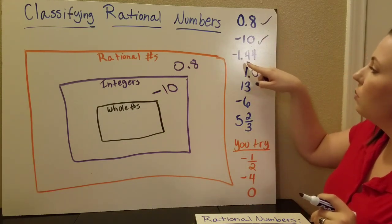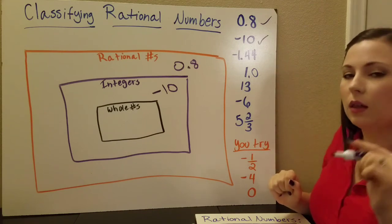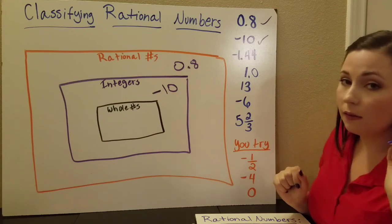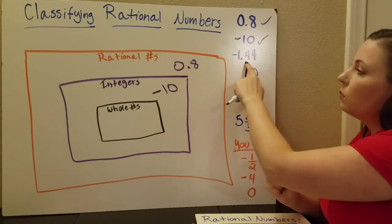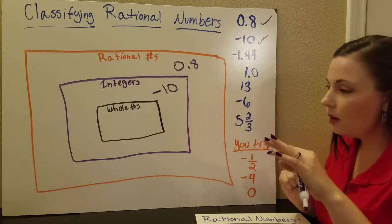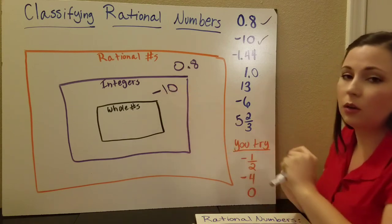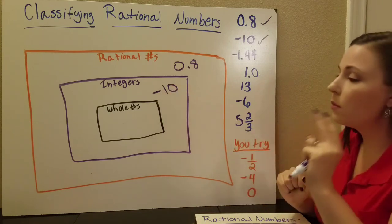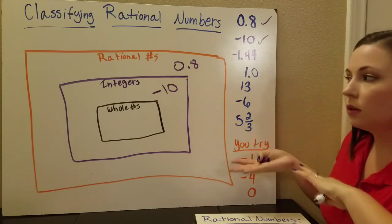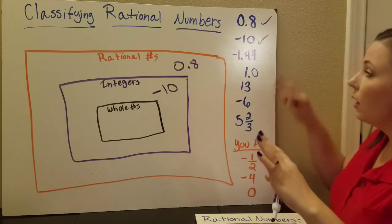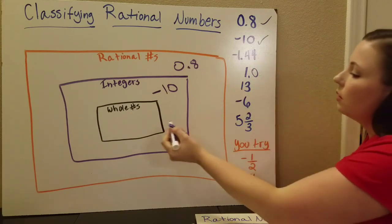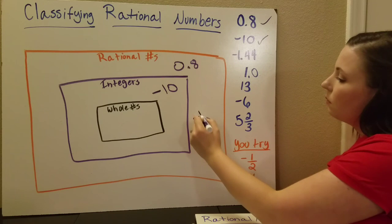Now negative 1.44. A lot of people get tempted when they see a negative sign and think integers — but no. That 0.44 takes it out of the integer category. Remember, integers are just whole numbers with a positive or a negative. If it's got a decimal in it, it's got to be in the rational numbers. So negative 1.44 is a rational number.